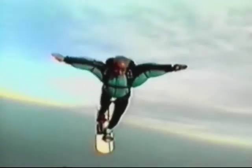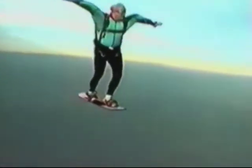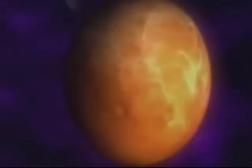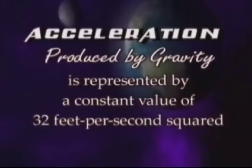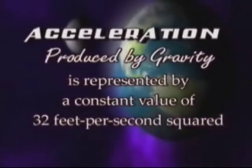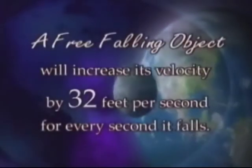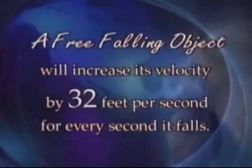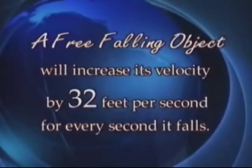The Earth produces a form of acceleration known as gravity, which affects everyone and everything on the ground and in the air. Acceleration produced by gravity is represented by a constant value of 32 feet per second squared. For example, a free-falling object will increase its velocity by 32 feet per second for every second it falls.